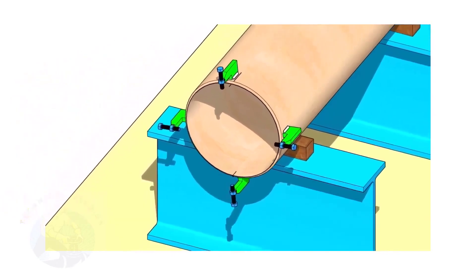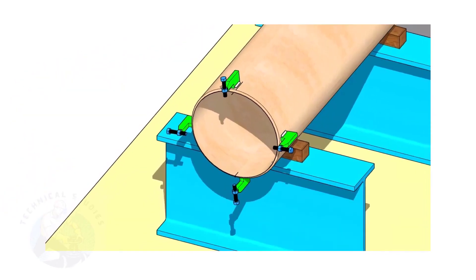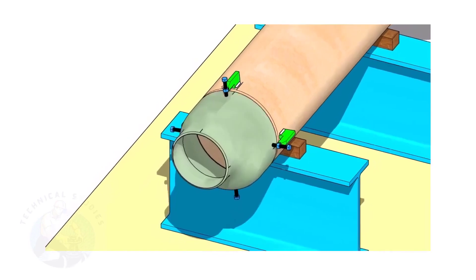If you don't have a pipe aligning clamp, tack weld four jack bolts 90 degrees apart, as shown.